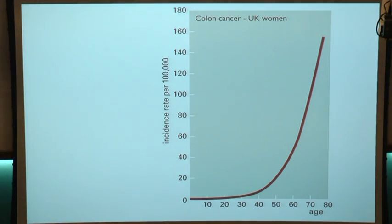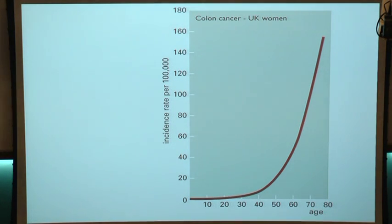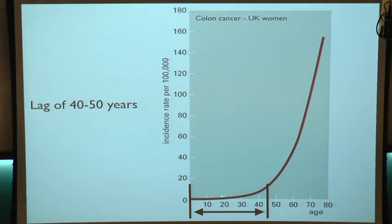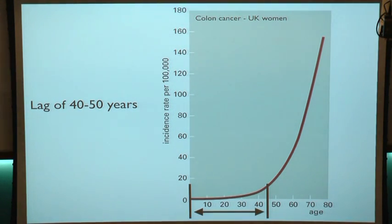What you're looking at here is some data collected from the United Kingdom on the incidence — the rate of incidence — of colon cancer in women. This is the number of people who get colon cancer per 100,000 people as a function of how old they are. A few things are immediately obvious. First of all, there's not a lot of young people that get cancer. There's a lag of about 40 or 50 years before people actually start getting cancer. Then once this thing kicks on, you get an exponential increase in the number of people who get cancer as a function of age.